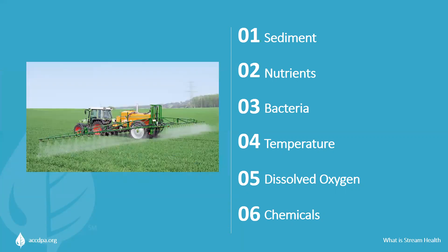Chemicals are used in manufacturing, pest control, normal household use, agriculture, forestry, and city operations. They are intended to be safely handled and controlled, but occasionally can find their way into streams. The results can be catastrophic to the point of killing everything, but lower levels can be less catastrophic yet still be considered dangerous to humans who drink the water and eat fish.